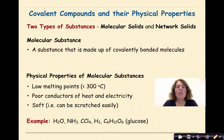Covalent compounds and their physical properties. There are two types of substances that we classify our molecular compounds into: molecular solids and network solids. Let's differentiate between the two. A molecular substance is a substance that is made up of covalently bonded molecules.